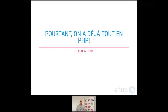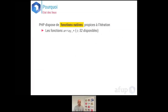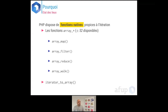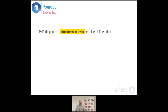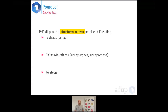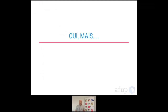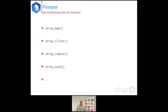Certains pourront dire qu'on a déjà tout en PHP. On a des fonctions natives propices à l'itération telles que les fonctions array_map, array_filter, array_reduce, array_walk — on en a 52 de disponibles. On a aussi des structures natives comme les tableaux, les objets ArrayObject, les objets implémentant ArrayAccess, les itérateurs, et les boucles for, foreach, while, do-while. Mais pourquoi a-t-on toujours besoin d'une collection ? Parce que dans ces fonctions PHP, il y a des incohérences.